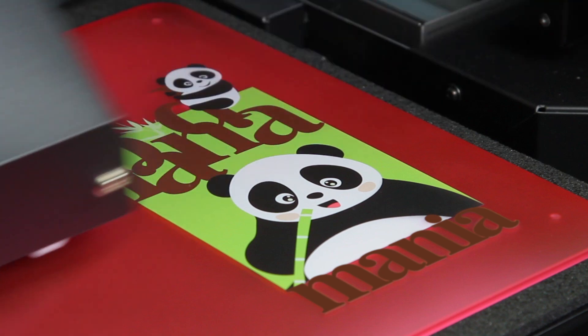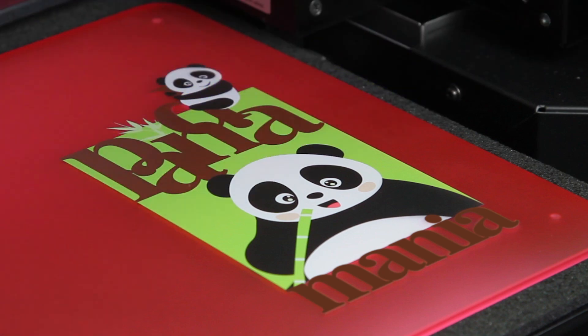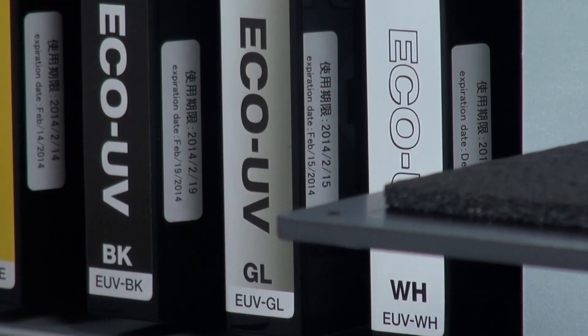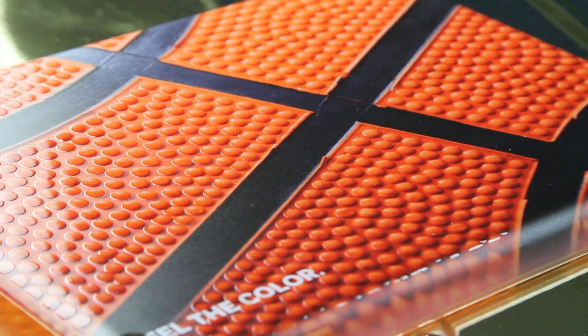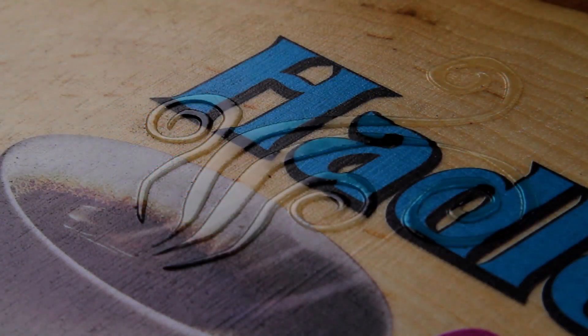White ink can be added as a spot color or a flood to make colors pop on dark or transparent materials. Eco-UV clear ink adds remarkably rich special effects ranging from matte and high-gloss finishes to custom 3D textures and embossed effects.